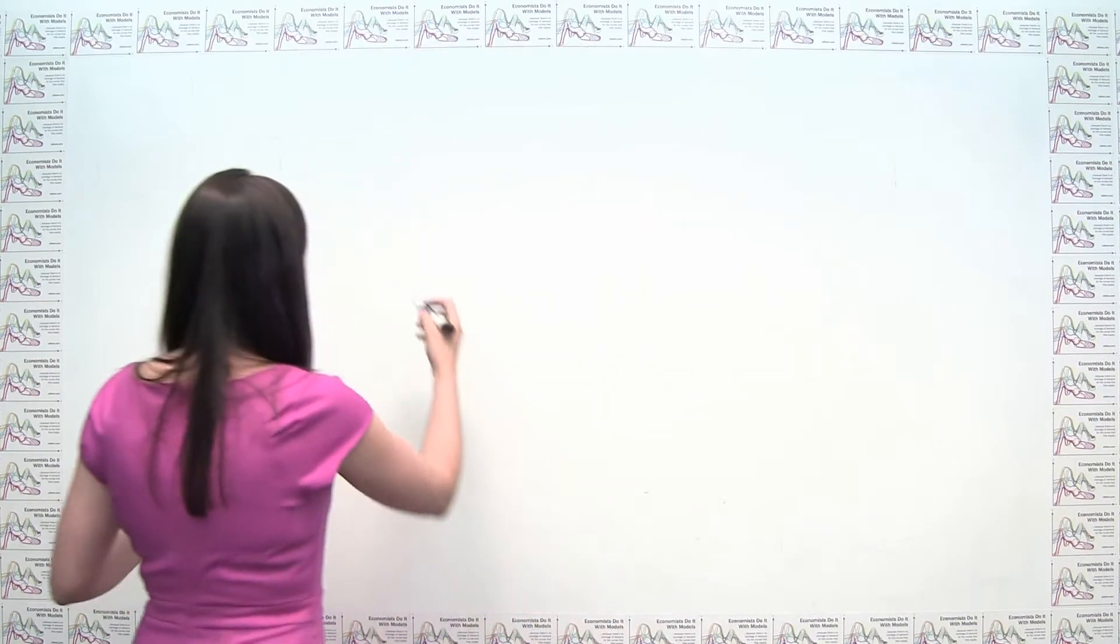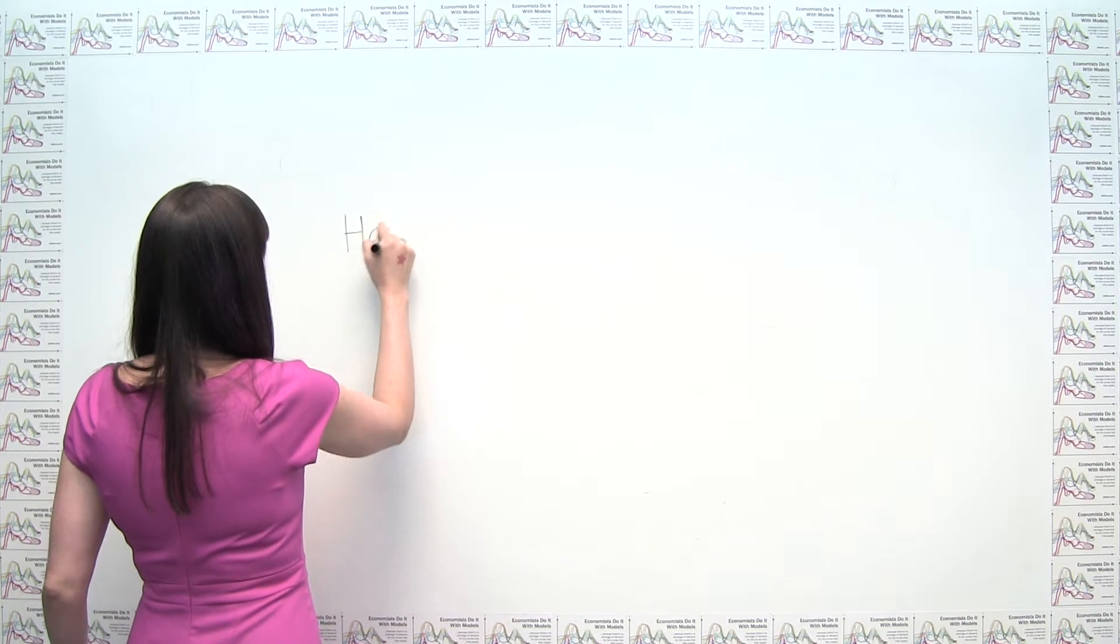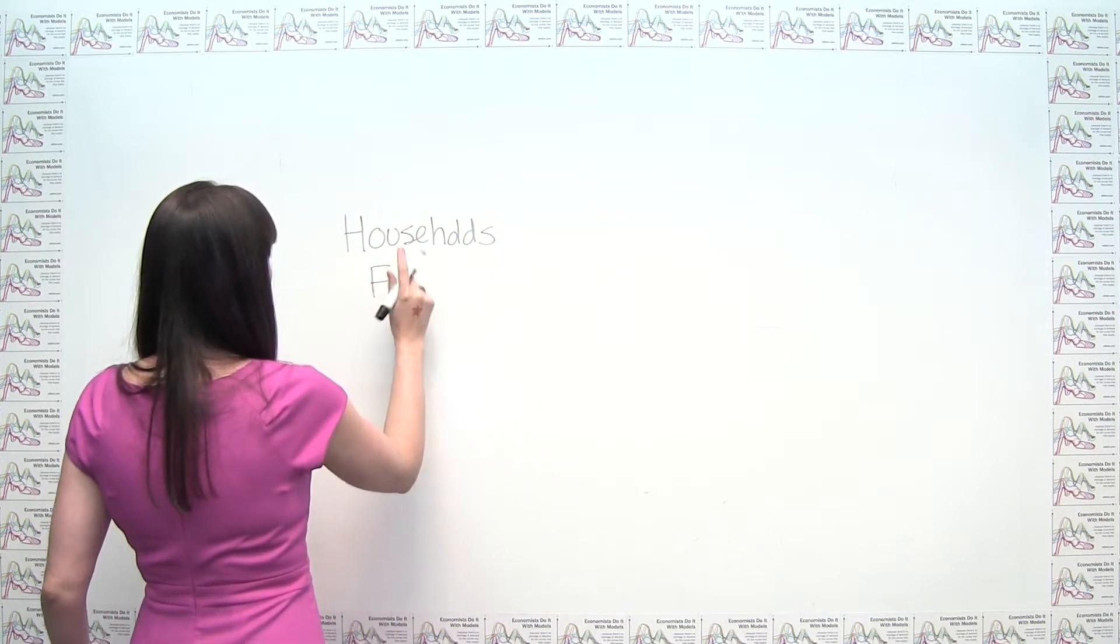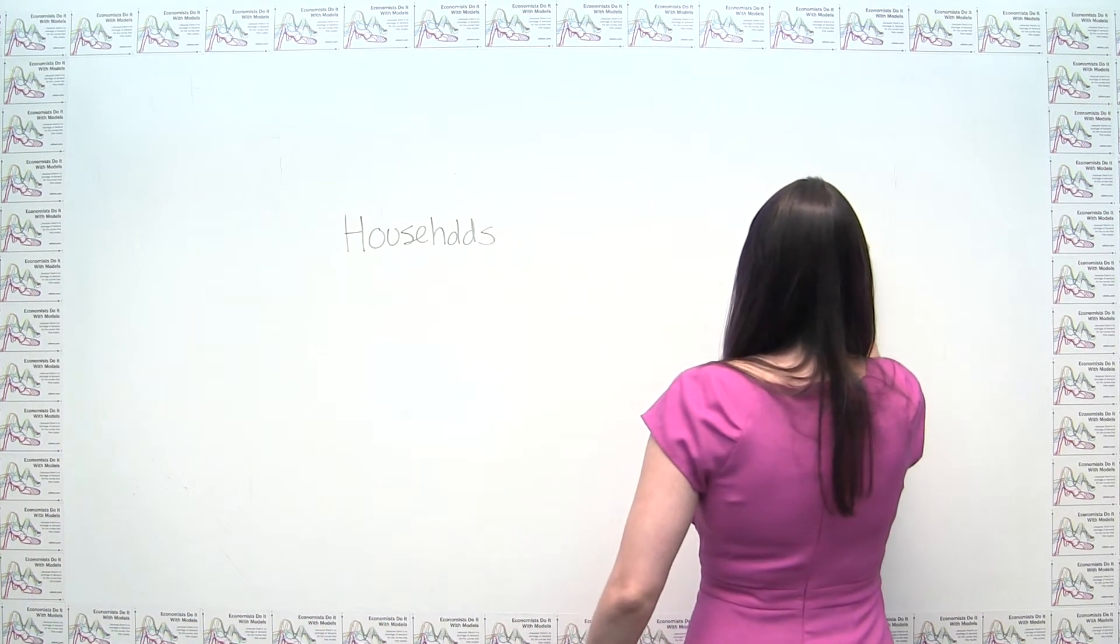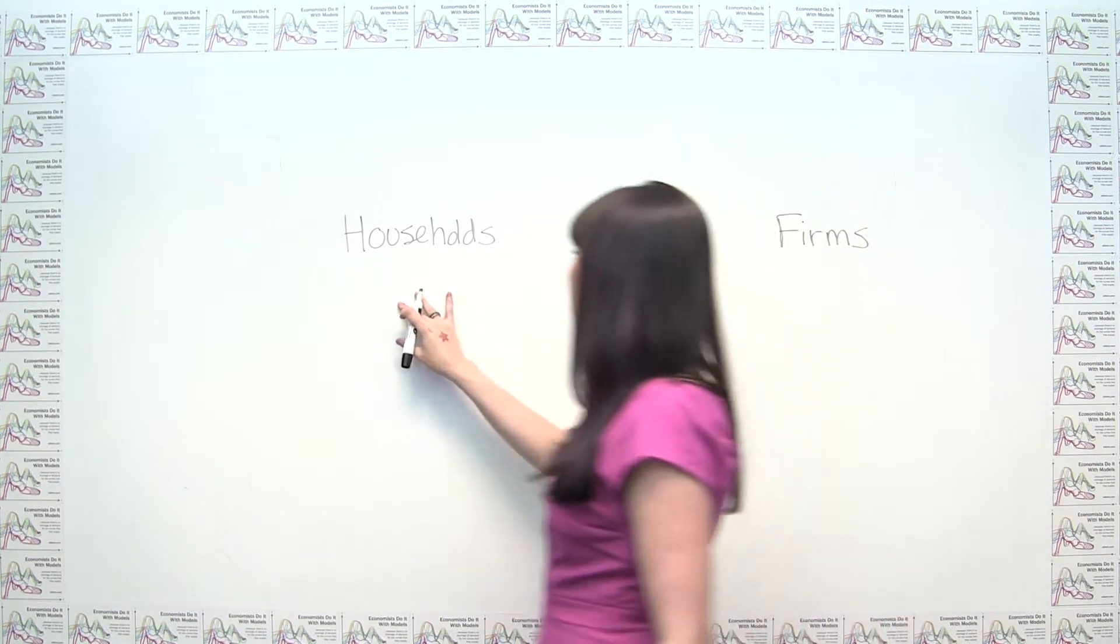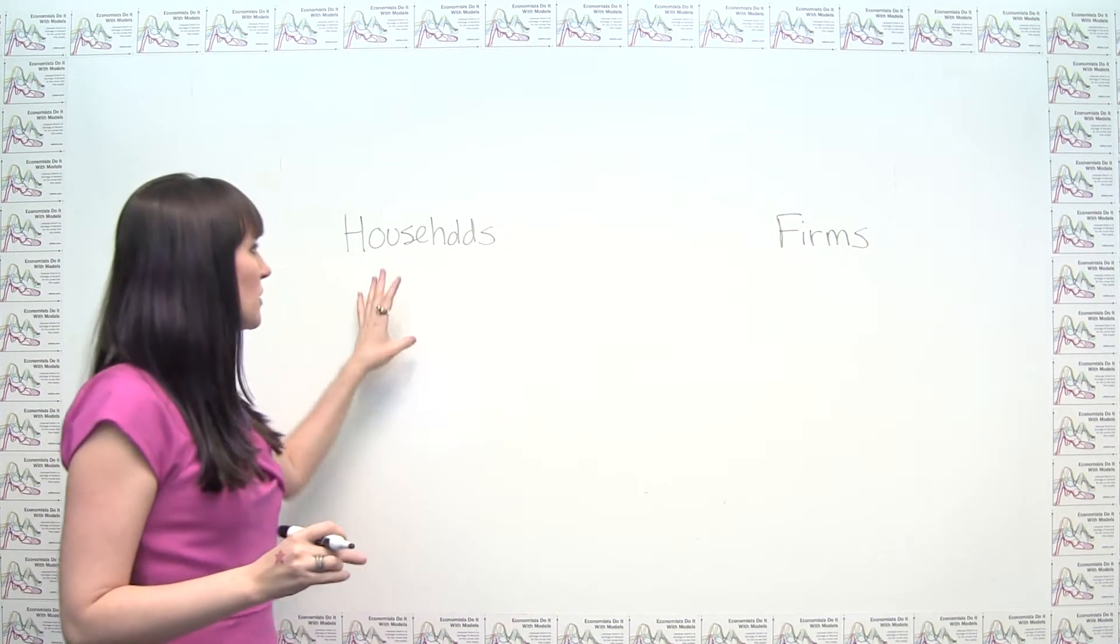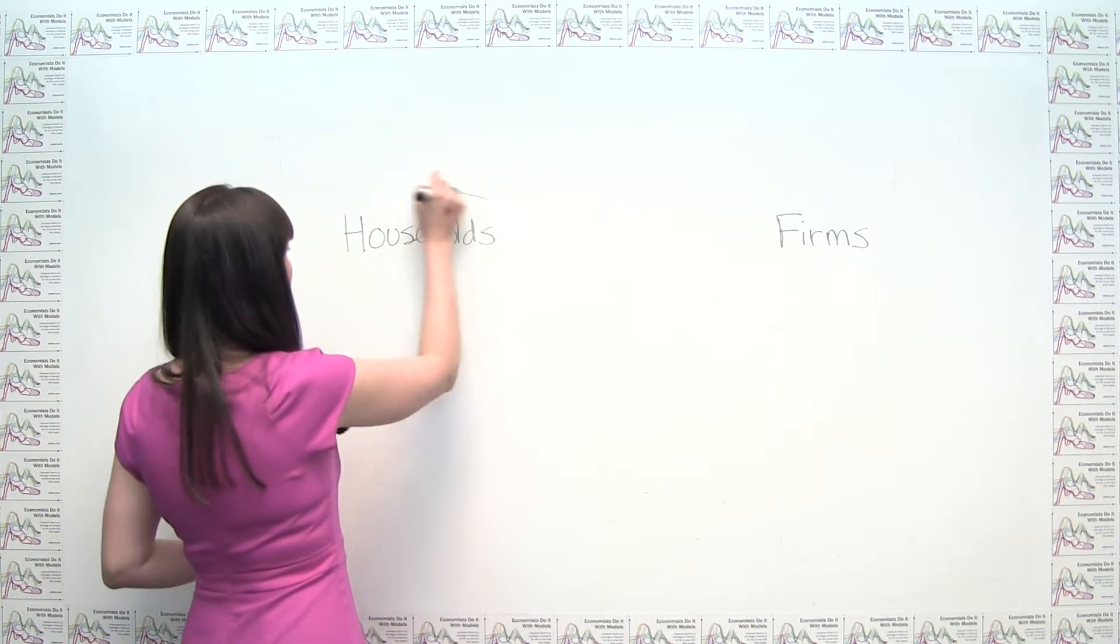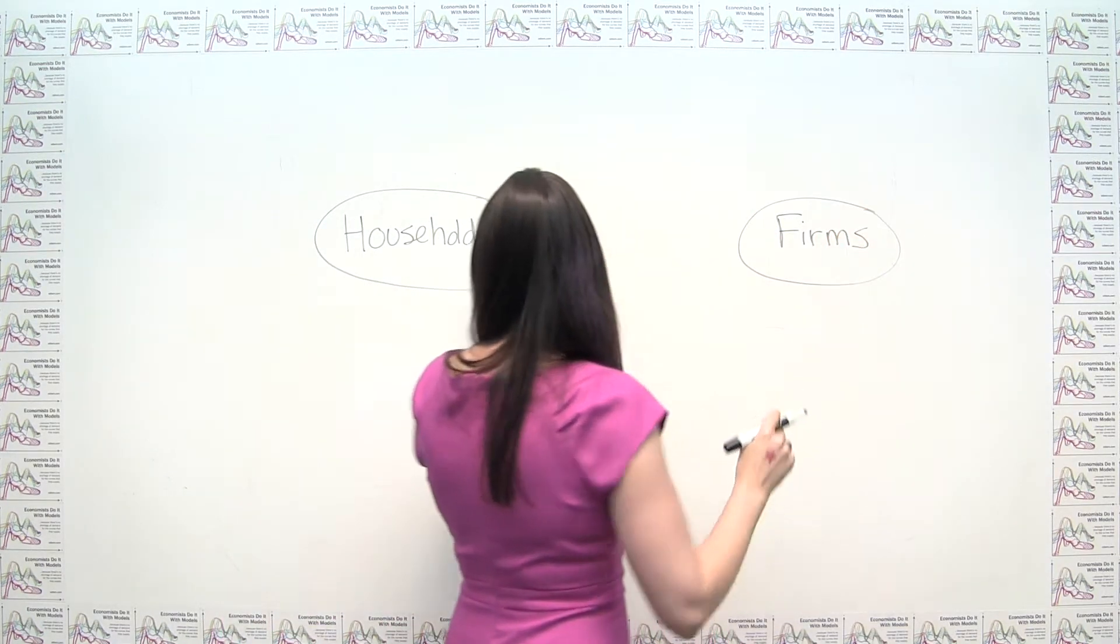So what we can do here is we can notice that there are two main sets of players in an economy. We have households, and we have firms. I'm going to put firms actually way over here. These are going to be on the opposite sides of our circular flow diagram. And it doesn't matter which one you have on the left and which one you have on the right. Just make sure that your arrows that we eventually draw are consistent with the way that you drew this. So I'm going to put circles around these guys. These are two of the four things that we need.